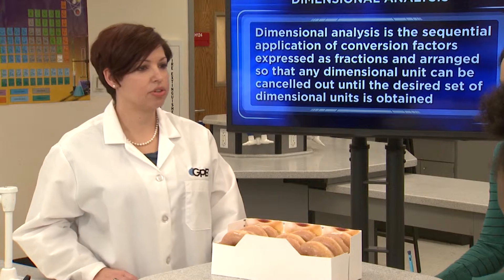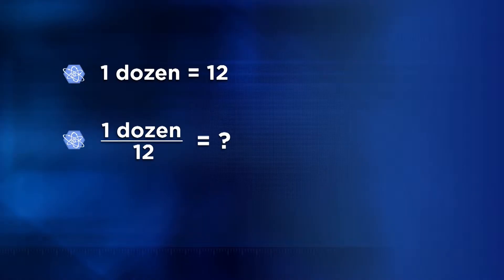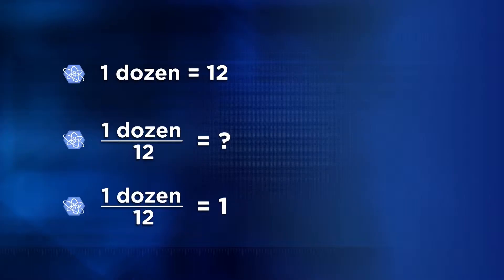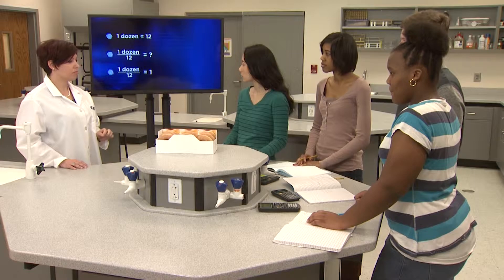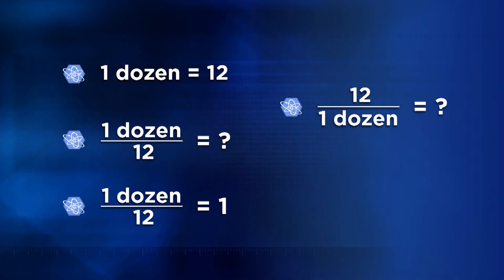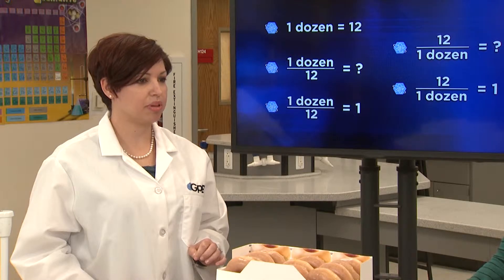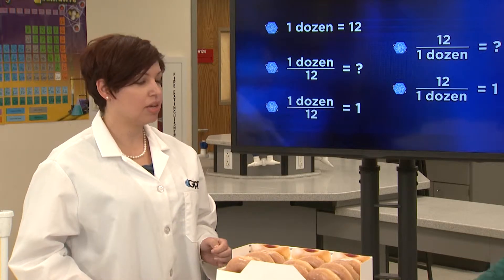Let's go back to the equivalent statement we used earlier. We used 1 dozen equals 12. If we rearrange this as a fraction — 1 dozen divided by 12 — that would just equal 1, since you're dividing 12 by 12. And if we write 12 in the numerator divided by 1 dozen in the denominator, that fraction also equals 1. What we've just demonstrated is that an equivalent statement can be written as a fraction. Regardless of which unit is placed in the numerator or denominator, it will always equal 1. When we write equivalent statements this way, in fraction form, we call them conversion factors.